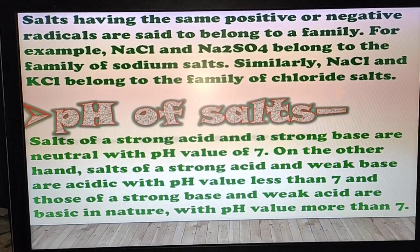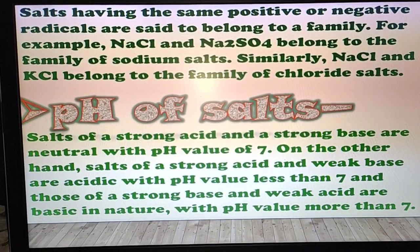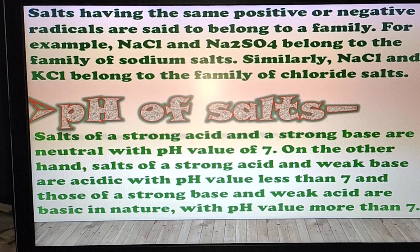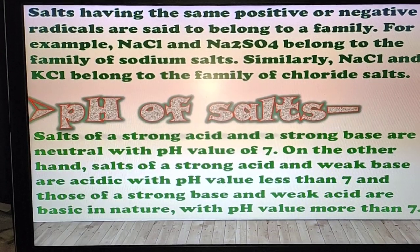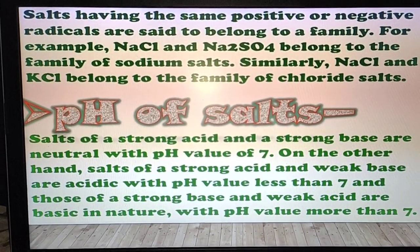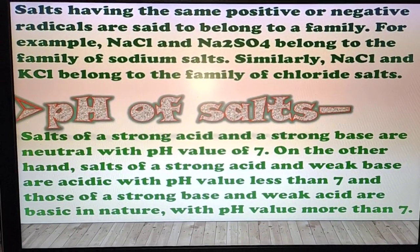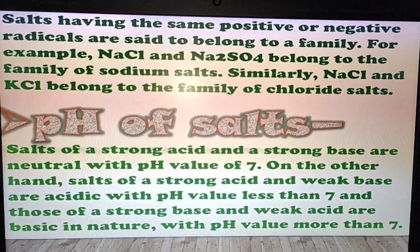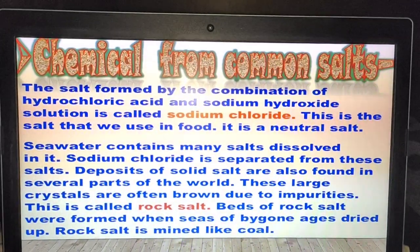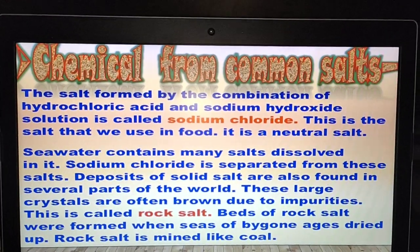Regarding the pH of salts: salts of a strong acid and a strong base have a neutral pH value of 7. Salts of a strong acid and a weak base are acidic with pH less than 7. Salts of a strong base and a weak acid are basic in nature with pH more than 7. Now we are dealing with the common salt.